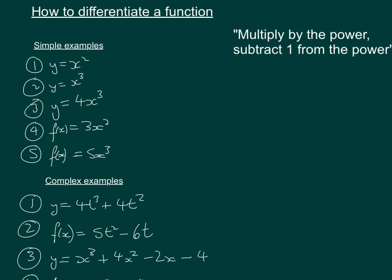So if we were to do that for the first one, we have to multiply x by the power which is 2. So we would write dy by dx which is the differential equals 2x and then take 1 from the power which would be 1. But I'm not going to leave that 1 on there because x to the power of 1 is just x. So that's question 1.